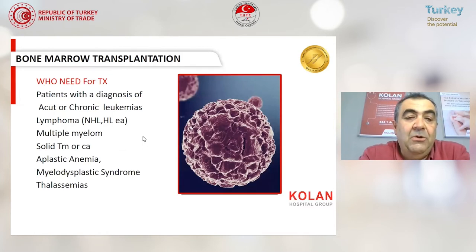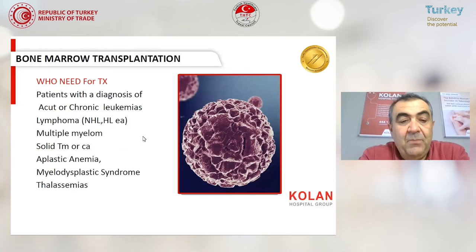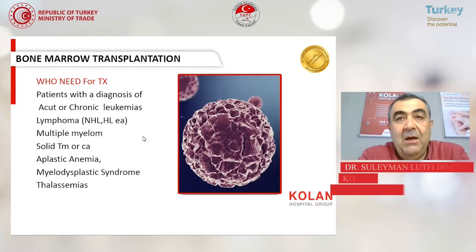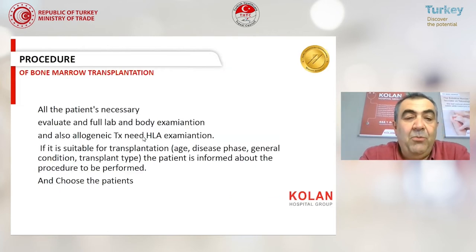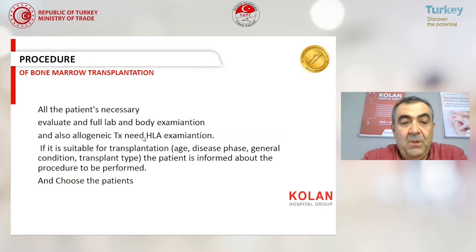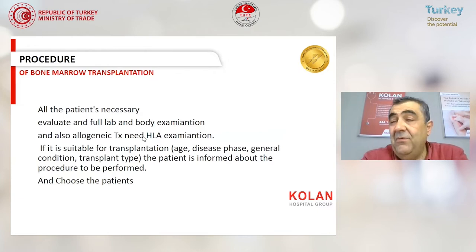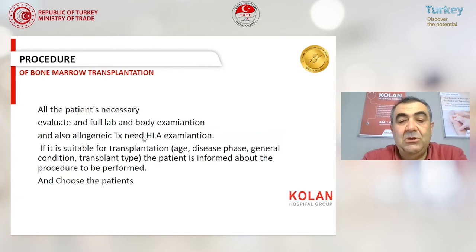Who needs transplantation in Turkey? Patients with a diagnosis of acute and chronic leukemia, lymphoma, multiple myeloma, some solid tumors, aplastic anemia, myelodysplastic syndrome, thalassemia, some metabolic disorders, and other treatment-refractory diseases. During bone marrow transplantation, all patients are evaluated with full lab and body examination. For allogeneic transplantation, HLA examination is needed. If suitable for transplantation, the patient is fully informed about the procedure to be performed and prepared for the transplant.